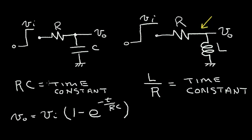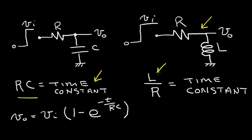Recall that in a resistor capacitor circuit, if you take the resistance and multiply it times the capacitance, you get time — something we call the time constant. In the resistor inductor circuit, the time constant is L divided by R.